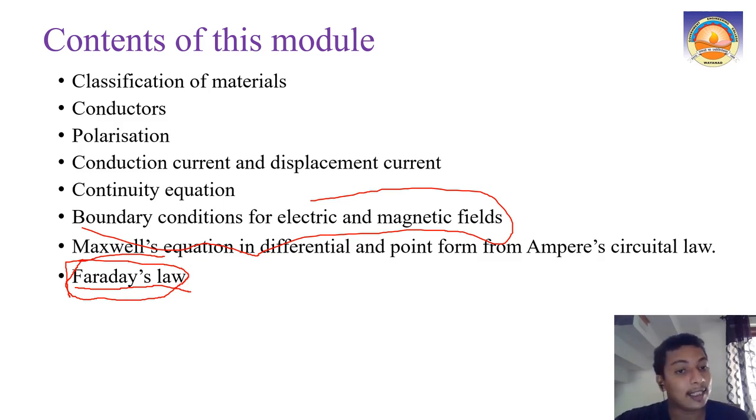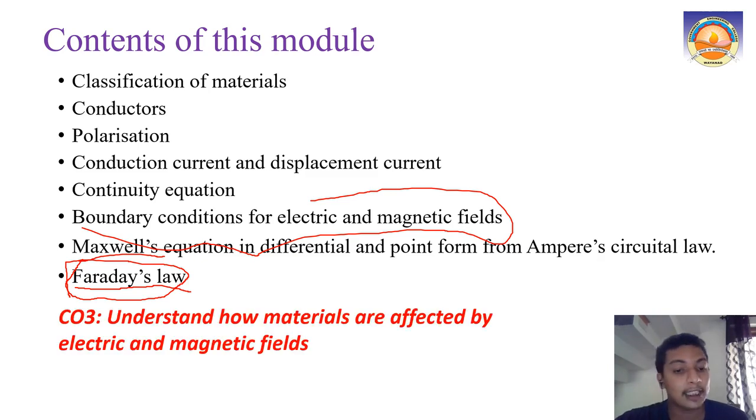These are the contents of this module. You are expected to have an understanding on how materials are affected by electric and magnetic fields. Your course objective CO3 is to understand how materials are affected by electric and magnetic fields. This will be covered with this module.